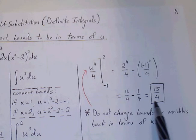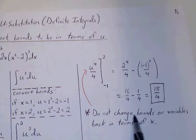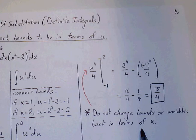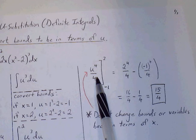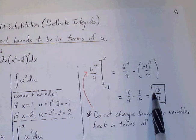So 16 fourths minus 1 fourth is 15 fourths. So this is our definite integral. So no need to change your bounds or variables back in terms of x, because we have everything in terms of u, and so we can simply find the definite integral.